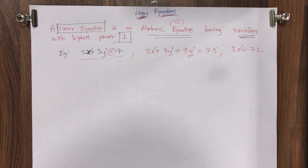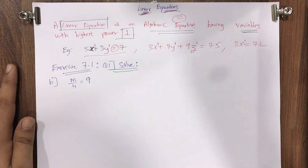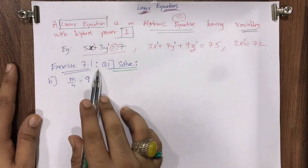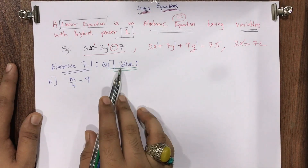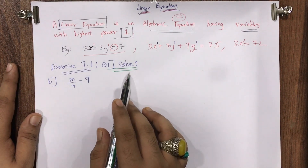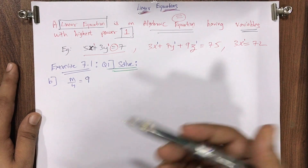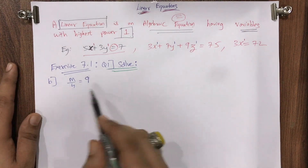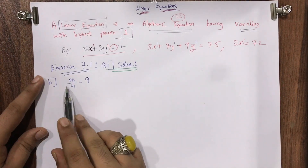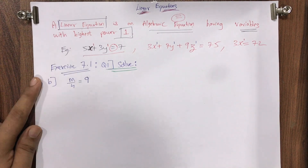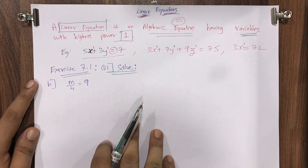Let's start with the exercise part. Exercise 7.1, question number one — the word 'solve' means we need to find the value of the unknowns, which are the variables. Sub-question b: m upon 4 is equal to 9. The variable in this question is m.